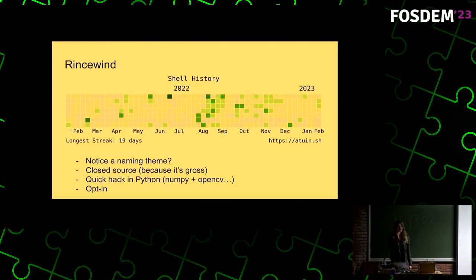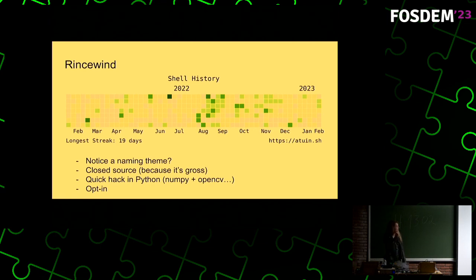I actually have one other service — and I'm glad most of the previous talks have discussed Python, because now I don't feel as weird for mentioning it. I have another service called Rinse Wind. What this basically does is peek into the database and generate graphs heavily inspired by the GitHub commit activity chart, but for your shell history. It's currently closed source, for no real reason other than it's a really horrible hack that I don't want to package nicely. It mostly uses NumPy and OpenCV and a few other things. It's also completely opt-in — if you don't want any proprietary code touching your data, you don't have to. Just one curl command enables this.